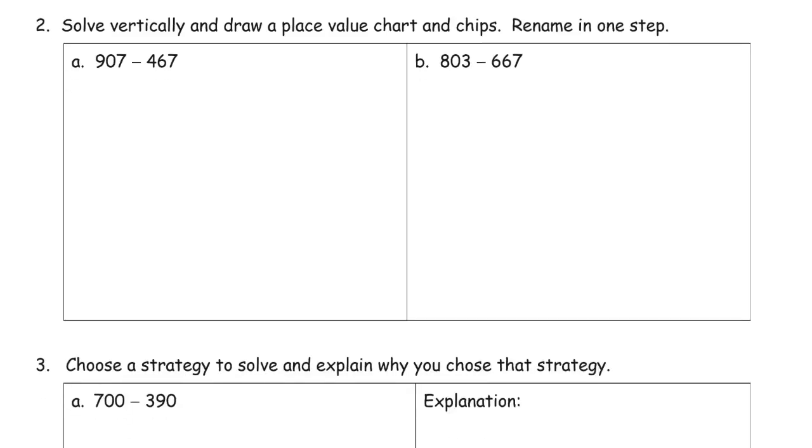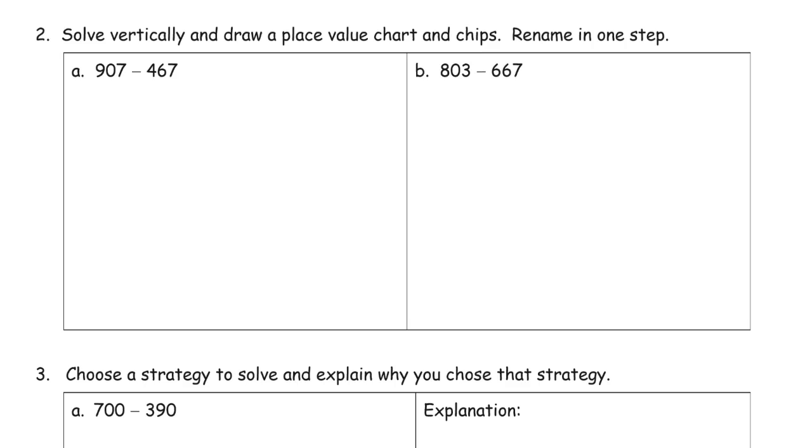Solve vertically and draw a place value chart and chips. And rename in one step. Now, renaming in one step is just, I'll show you what it means when the time comes. And you'll see, because it's what you have to do a lot of times when there's a 0 in the tens place for your minuend.